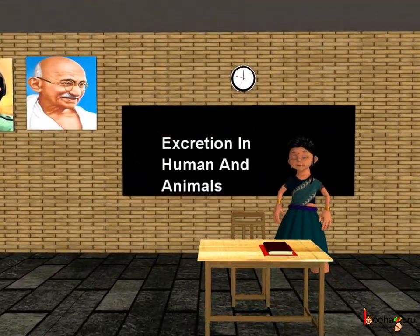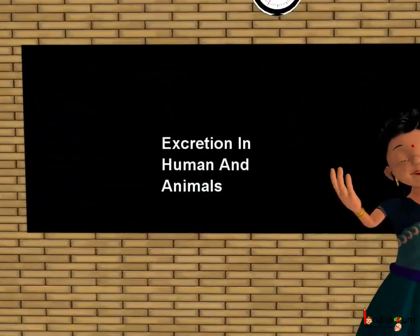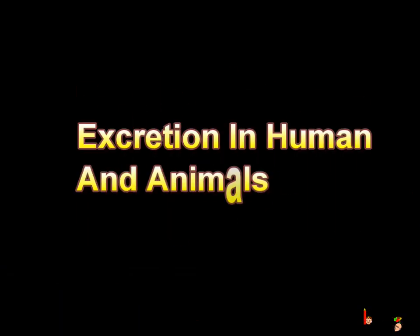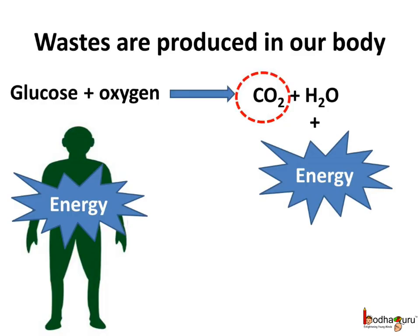Good morning children. Today we shall learn about excretion in humans and in other animals. We already know that respiration and many other activities occur in organisms to retain life. But many harmful or waste substances are produced in these processes, like carbon dioxide. What if these harmful things stayed inside the cells and the organs? Obviously it would be very harmful, so organisms need to get rid of these harmful waste.